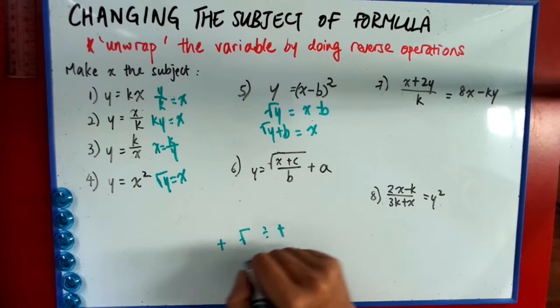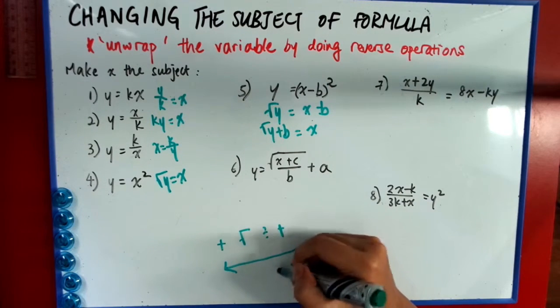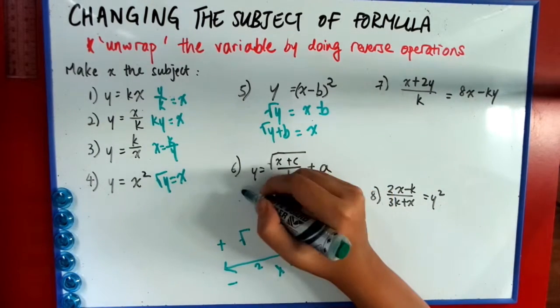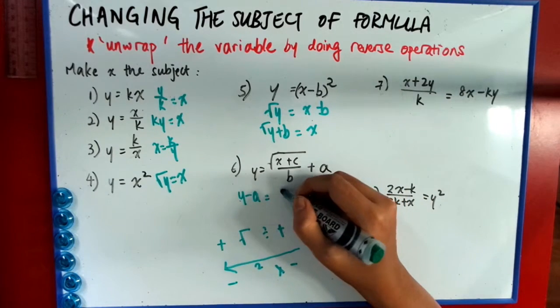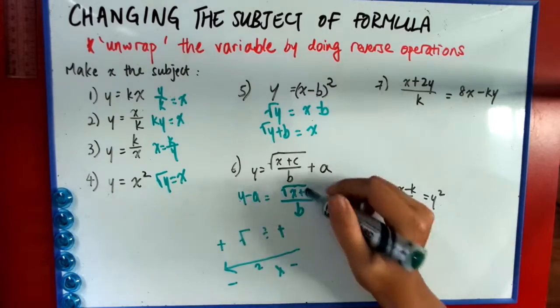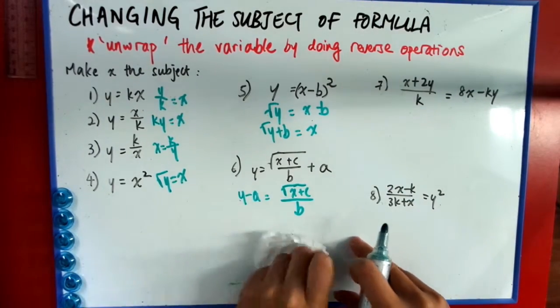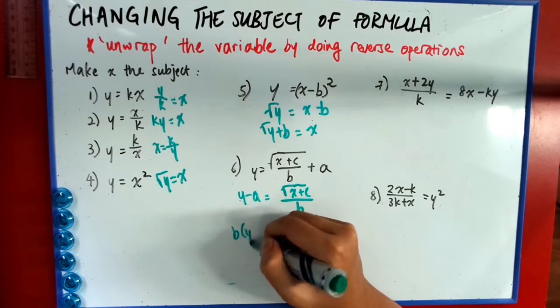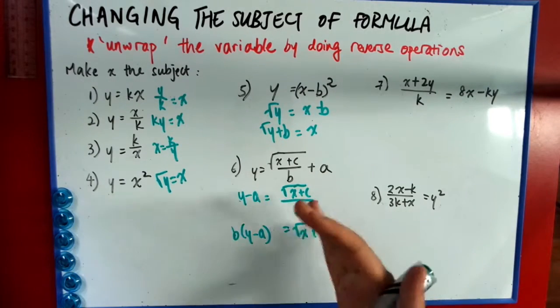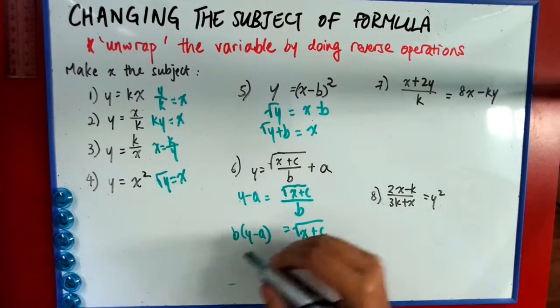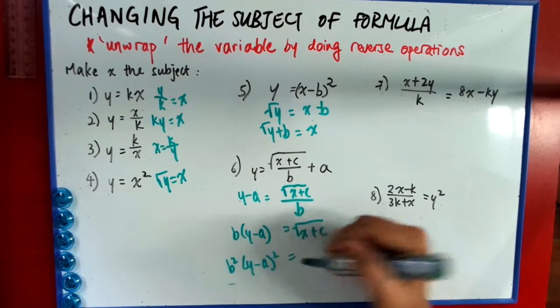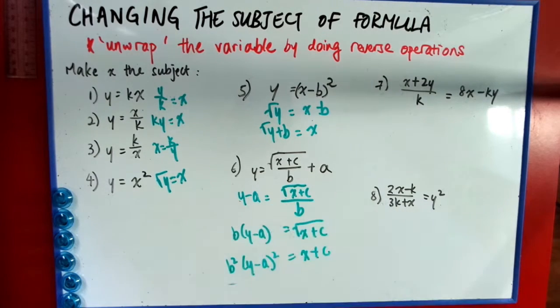So then I just have to reverse this into minus. Just do the opposite, times, square, minus. So minus a first. So y minus a is root. The top remains the same. And then this one remains the same. Then I have to do the times. Times b. After that, then I have to square it. Square both sides. So I should get b squared, y minus a squared is x plus c.